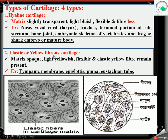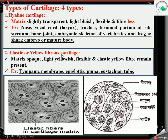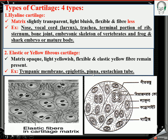Now the elastic or yellow fibrous cartilage. The matrix of this cartilage is opaque, light yellowish, flexible, and elastic — yellow fiber is present. The fiber color is yellow, that is why it is called yellow fibrous cartilage, also called elastic fibrous cartilage. Examples include the tympanic membrane, epiglottis, pinna, and eustachian tube.